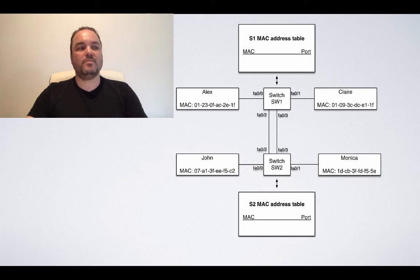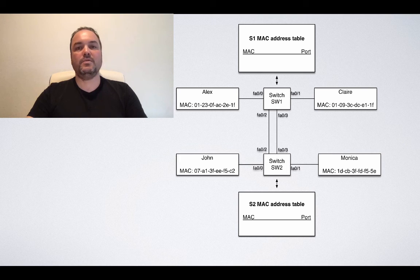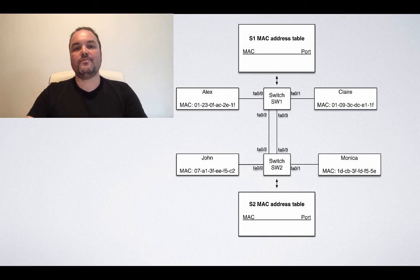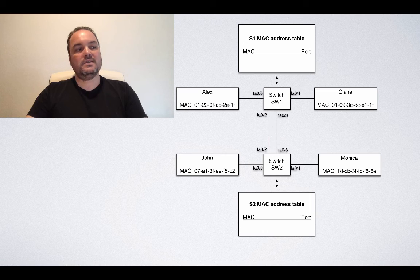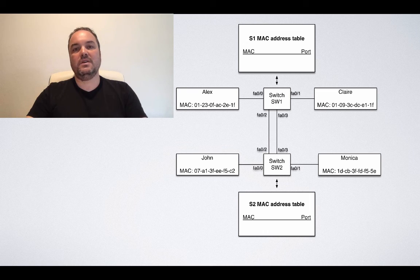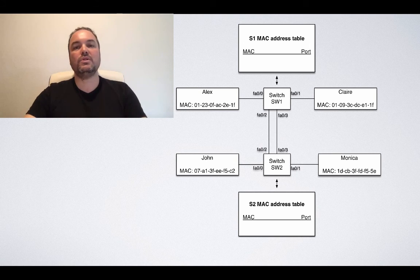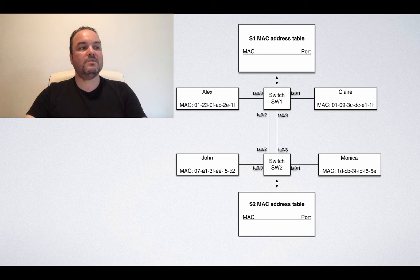Let's look at an example of two switches, SW1 and SW2, that interconnect four server hosts: Alex, Claire, John, and Monica. And as you can see at this point, their MAC address tables are empty as depicted by S1 and S2 MAC address tables. The MAC address tables are empty because none of the hosts has sent any frames yet at this point.